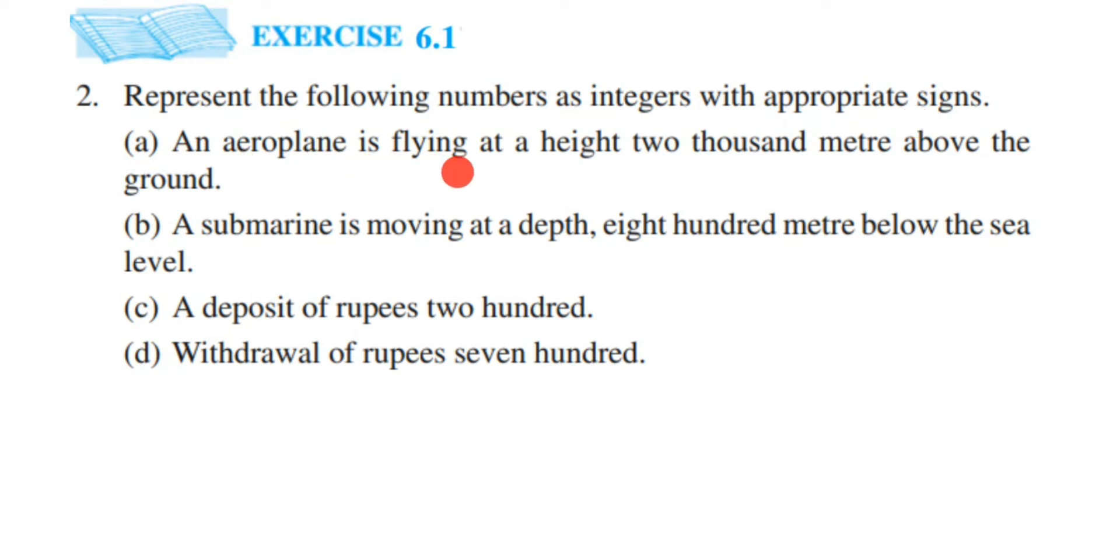An aeroplane is flying at a height 2000 meters above the ground. Now we know that suppose this is the ground, then above is positive and below is negative, and the ground will be zero. So anything above the ground counts with a positive sign, anything below the ground level is considered as a minus sign. Since the aeroplane is flying at 2000 meters above, the sign will be positive. The answer is +2000 meters.